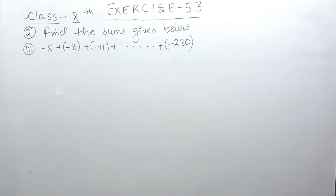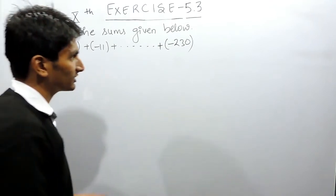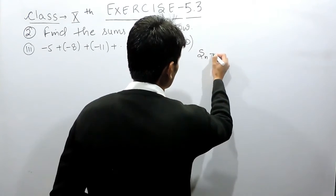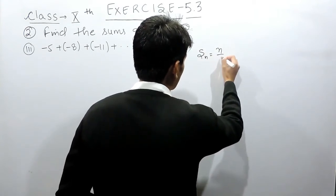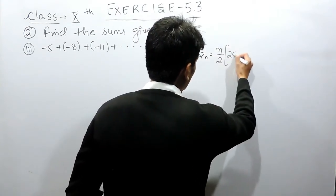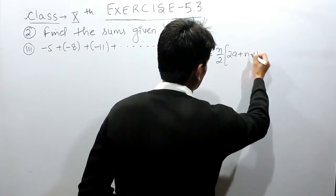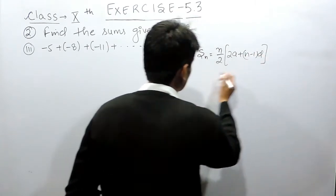In this case also, you have to find the sum of the given series, or you can say the given arithmetic progression. To find out the sum, we have a formula which says S_n = n/2 × [2a + (n-1)d], and there is another formula.